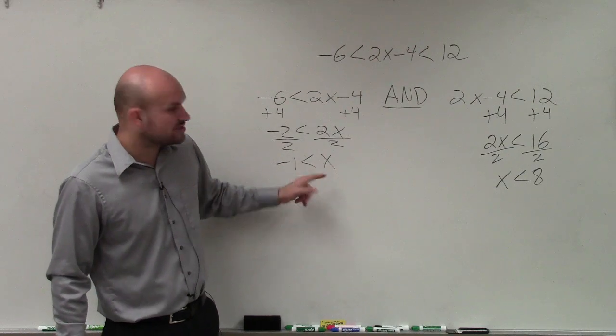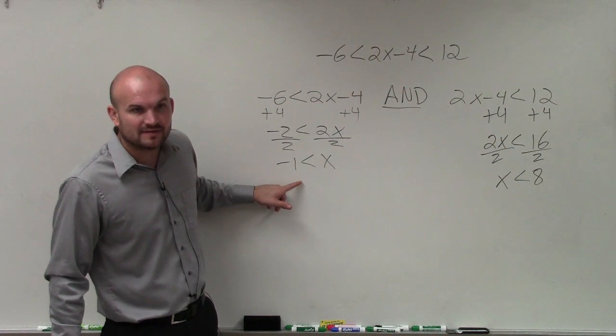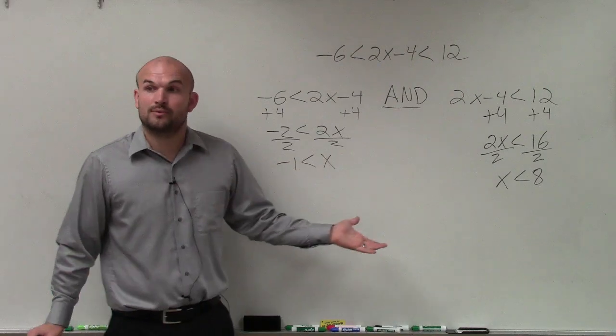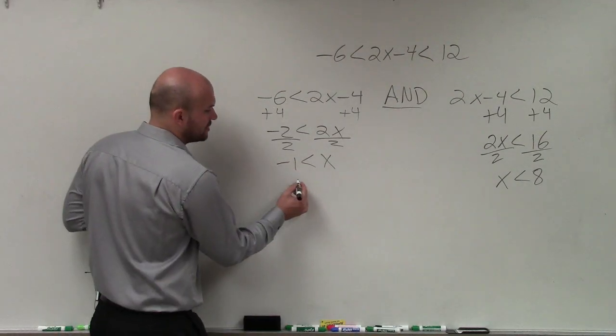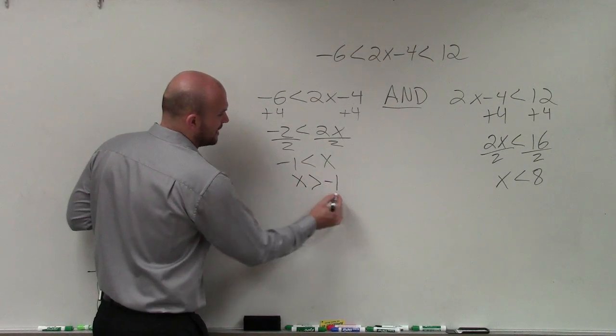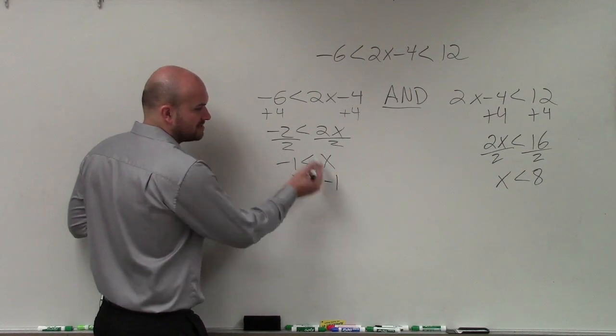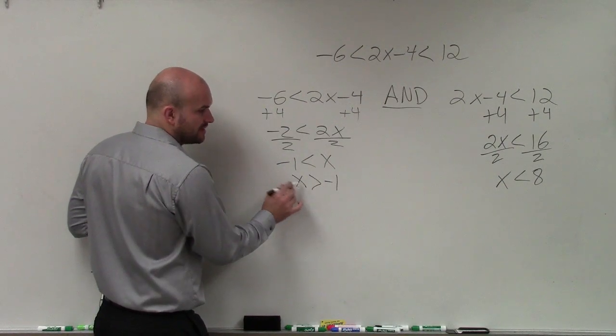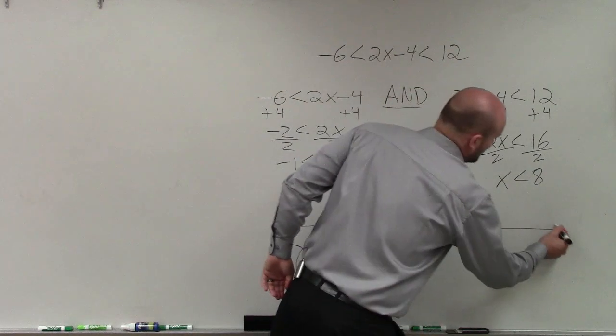The reason being is that it works when the variable is on the left side of the inequality statement. So one way you can do that is to flip this inequality. x is greater than negative 1. OK? These are the same thing. It's just now the variable's written on the left-hand side. So now we go ahead and graph.